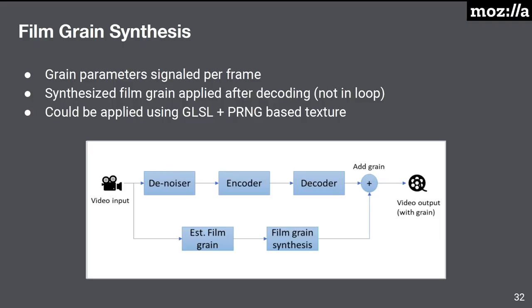The last feature is film grain synthesis, which is not in-loop. Grain parameters are signaled on a per-frame basis. In the encoder, you perform a denoising operation on your input video, estimate the film grain characteristics from the original, and signal those film grain parameters. The decoder then decodes the frame, synthesizes film grain, and adds it back in. This was contributed by Netflix and was designed to be implemented using GLSL on the rendering end.